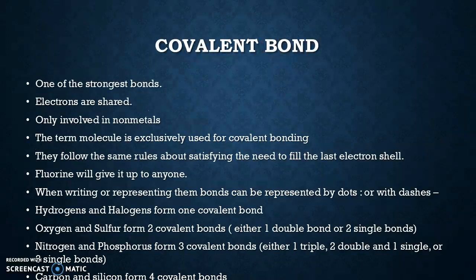A covalent bond is one of the strongest bonds we have. In this case, the electrons are shared — no one's giving anything up, no one's gaining anything; they just share what they're each missing. That ends up being the strongest bond we have. Covalent bonds only form between nonmetals, which is why hydrogen and oxygen binding together to make water is a covalent bond. The term "molecule" is exclusively used for covalent bonding — compounds are two or more elements combined, but molecule is specifically only for covalent bonds. You cannot call an ionic bond a molecule. Covalent bonds also follow the octet rule, needing to fill that last electron shell.